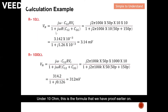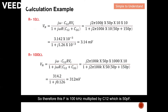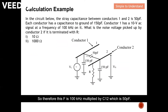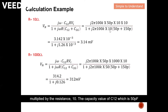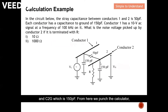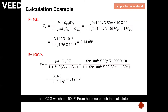For the 10-ohm case, we use the formula we proved earlier. Omega equals 2πf, and the frequency given is 100 kHz. So we compute: 2π × 100 kHz × C12 (50 pF) × R (10 Ω) × Vin (10 V) in the numerator. For the denominator: 1 + j × 2π × 100 kHz × R (10 Ω) × (C12 + C2G) = 1 + j × 2π × 100 kHz × 10 × (50 pF + 150 pF).